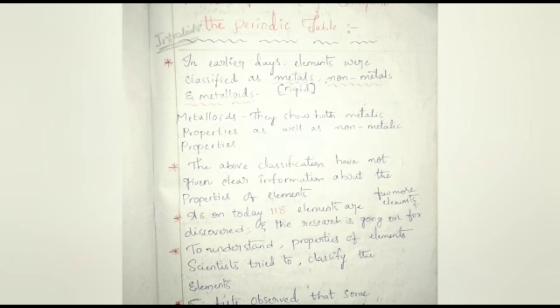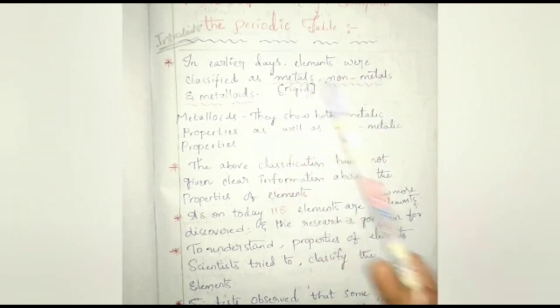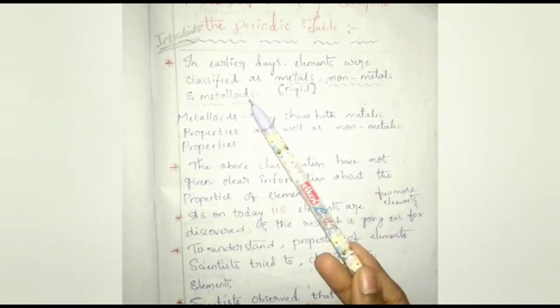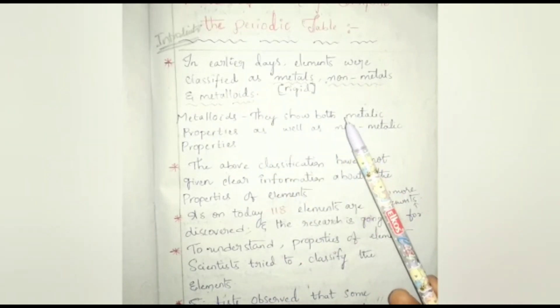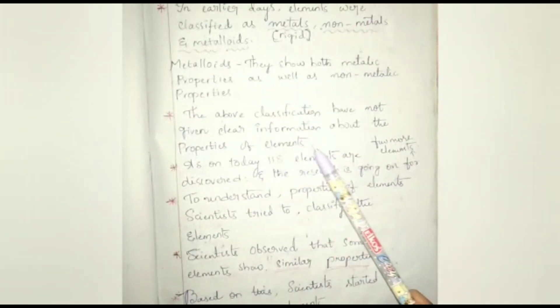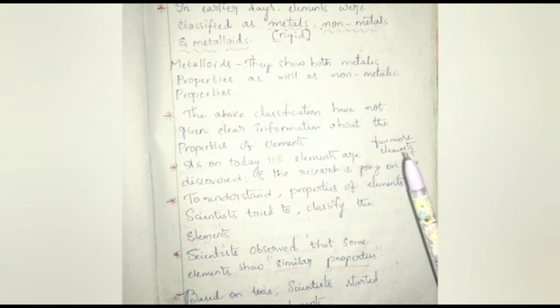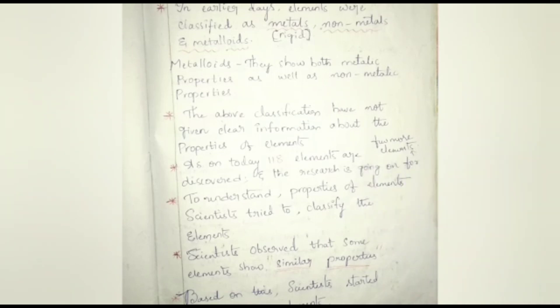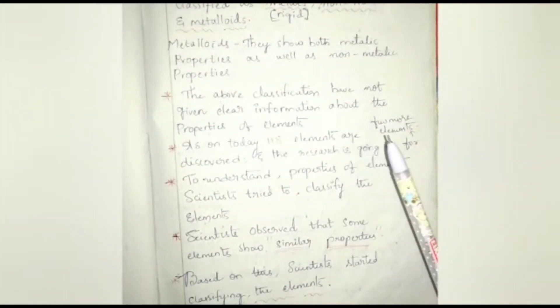In earlier days, elements were classified as metals, non-metals, and metalloids. Metalloids show both metallic and non-metallic properties. However, this classification did not give clear information about the properties of elements. Today, 118 elements have been discovered and research is ongoing for a few more. To understand the properties of elements, scientists tried to classify them, observing that some elements show similar properties.